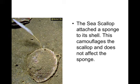Number three: the sea scallop attached to a sponge on its shell. This camouflages the scallop and does not affect the sponge in any way, shape, or form. Is this mutualism, commensalism, or parasitism — or is it a predator-prey relationship? You tell me.